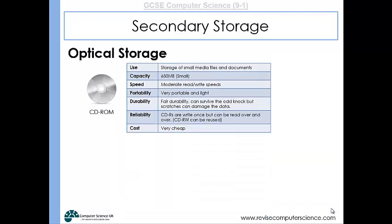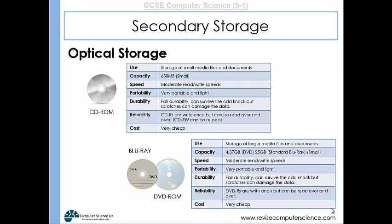In terms of optical storage, there are CD-ROMs, DVDs, and Blu-ray discs. A CD-ROM has a capacity of about 650 megabytes; read and write speeds are okay but not incredibly fast. They are very portable and exceptionally cheap, making them ideal for distributing programs to the masses. CD-Rs can only be written to once but read repeatedly, while CD-RWs can be reused. The main difference between CD-ROMs, DVDs, and Blu-rays is capacity: CD-ROM is 650 megabytes, a DVD is around 4.5 gigabytes, and a Blu-ray is about 25 gigabytes.